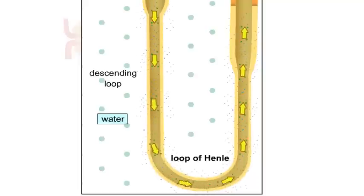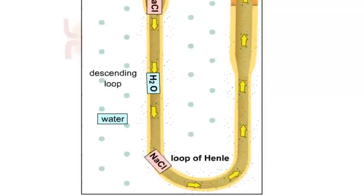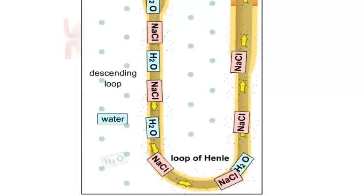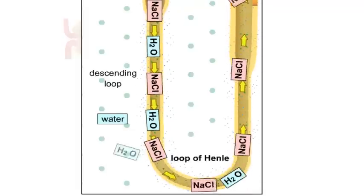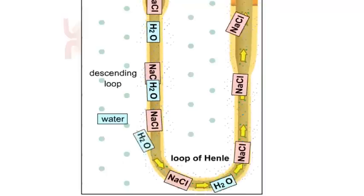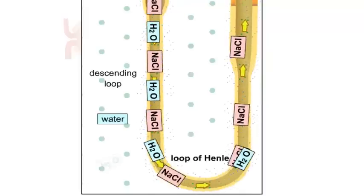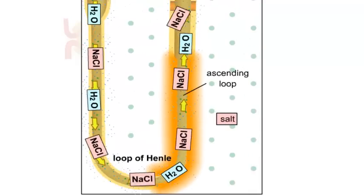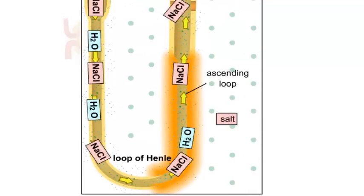The descending portion of the loop of Henle is highly permeable to water but not to salts or any other materials. There is an osmotic concentration gradient of salts and urea in the interstitial fluid that surrounds the loop. As the filtrate passes into the salty renal medulla, water will leave the loop by osmosis. This results in a concentrated filtrate that is high in salt and urea but reduced in water content.